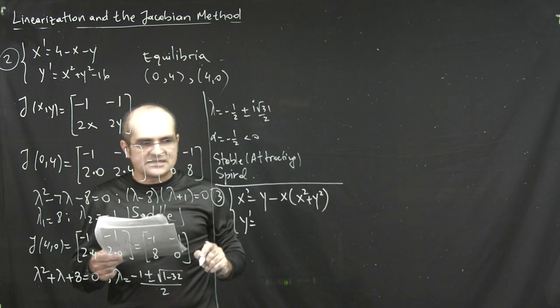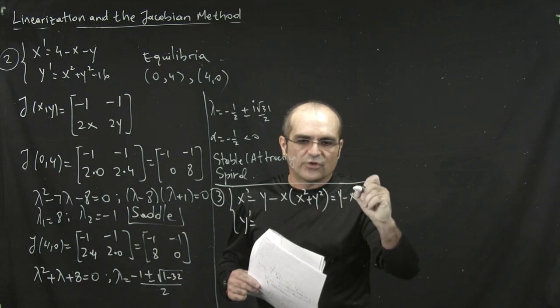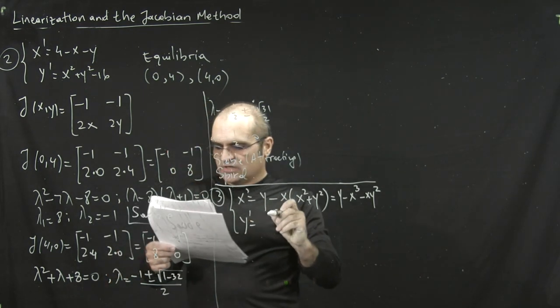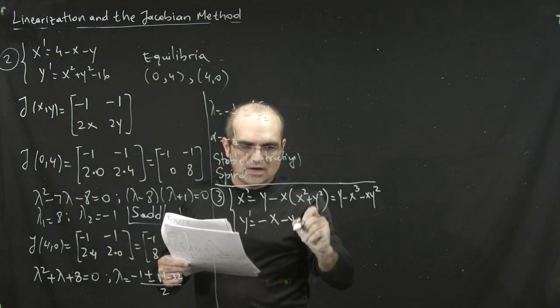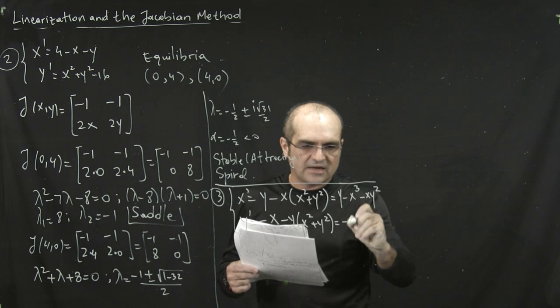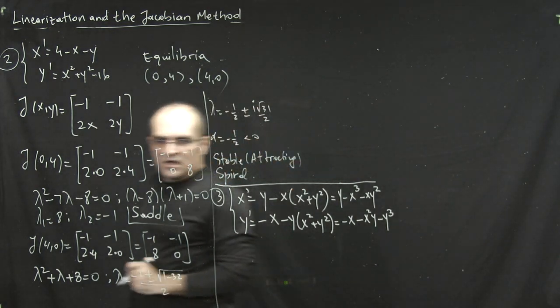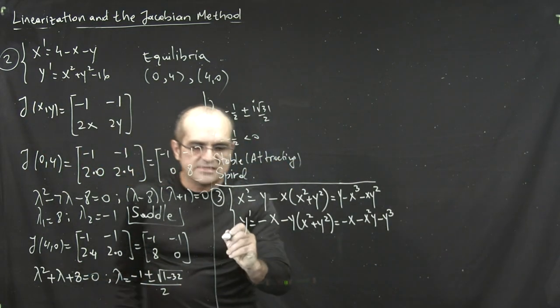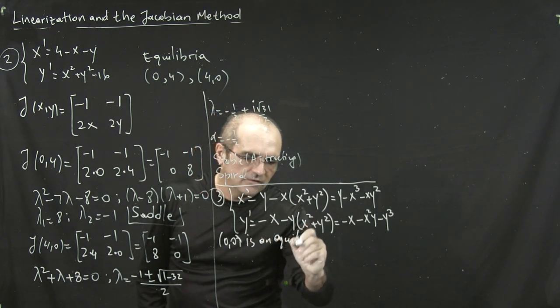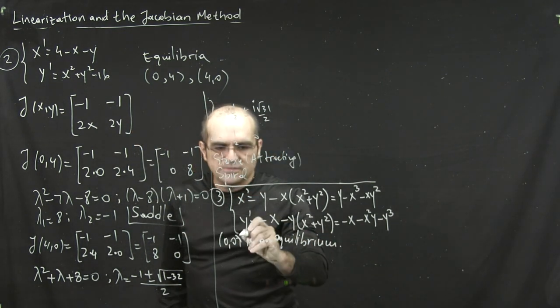So let's just do that first. So suppose x prime is y minus x times x squared plus y squared. And actually I'm going to write it without parentheses as well for the purpose of differentiation because that's easier. And the second equation is minus x minus y quantity x squared plus y squared. And again without parentheses that's minus x minus x squared y and minus y cubed. And let's look at the zero zero equilibrium point. It's obviously that zero zero is an equilibrium. Actually I don't know if there are other. I don't think so if I remember correctly the picture. But zero zero for sure is an equilibrium point.